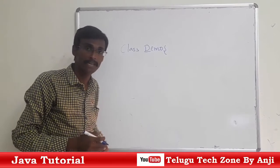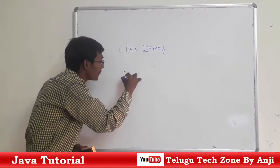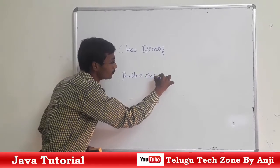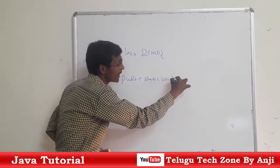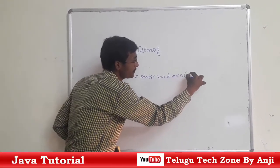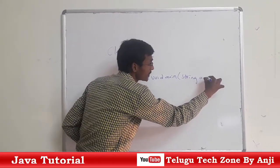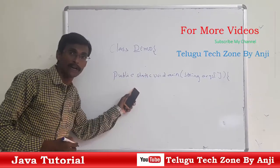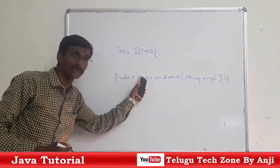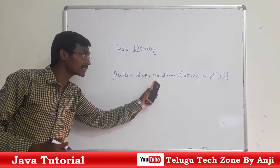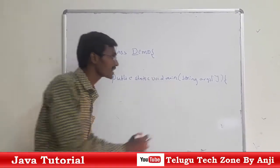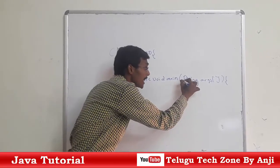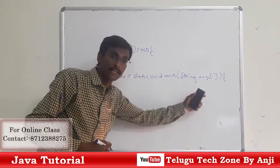In Java we have a main method called: public static void main(String[] args). Here, public is an access modifier, static is a keyword, void is a return type, main is the main method, and String and args are parameters. String must be capitalized.